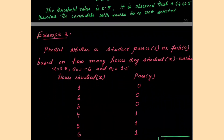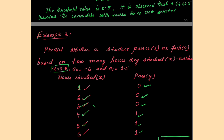Let us see one more example. A training dataset provides the number of hours of study of a student, where y values are categorical: 0 means fail and 1 means pass. For example: 1 hour → 0, 2 hours → 0, 3 hours → 0, 4 hours → 1, 5 hours → 1, 6 hours → 1. The problem asks: for x = 3.5 hours of study, does the student pass or fail?